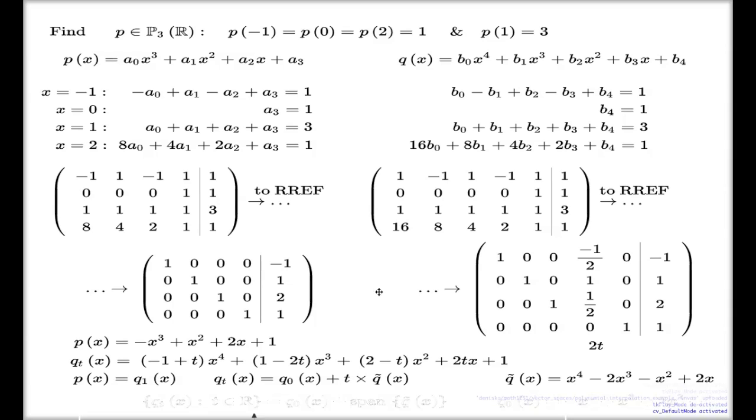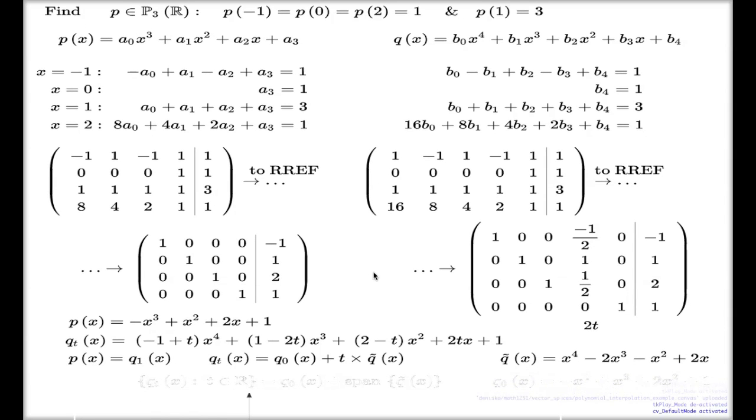Here's the polynomial Q̃. Let me just lift it up a little bit. Here's my polynomial Q̃: x⁴ from here, -2x³ from here, -x² from here, 2x from here, and nothing from here. So my polynomial splits, my solution, my general solution to the interpolation problem splits into this representation.